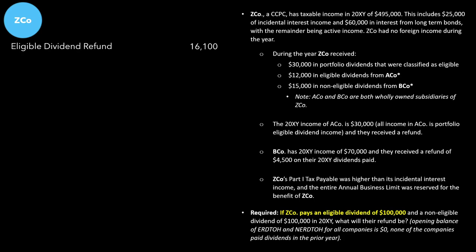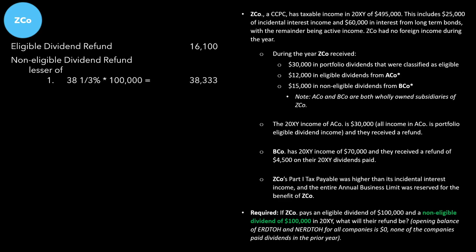We aren't done, because ZEDCO also paid out a non-eligible dividend of $100,000. When we calculate the non-eligible dividend refund, we have to do another lesser-of calculation. It's going to be the lesser of: 38⅓% of the non-eligible dividend — also $100,000 — giving $38,333, and the non-eligible RDTOH balance, which we weren't given. So we have to solve for it. Let's visualize this by drawing out the account, with a question mark at the bottom.